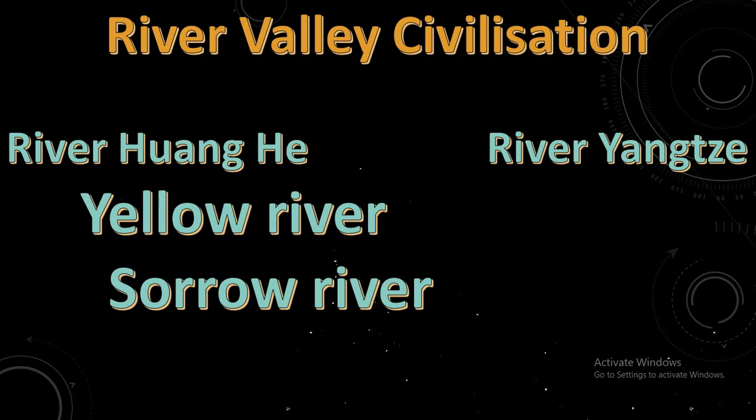In China, the river Huang He and river Yangtze have tremendous amounts of water. It has been said that about 70 percent of the economic growth comes through this river valley civilization. The Huang He river has been given two other names: one is the Yellow River and the other is the Sorrow River.